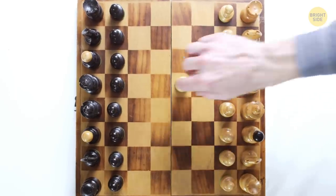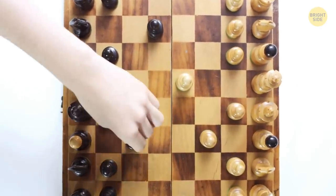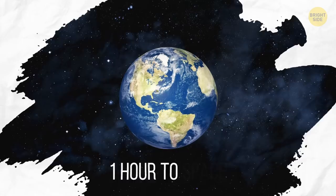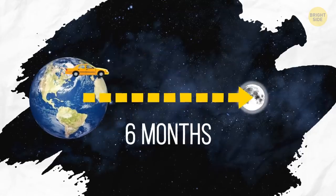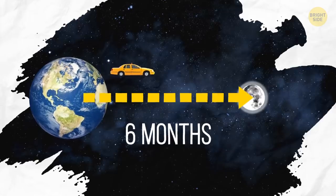There are more unique combinations in chess than atoms in the universe. If you get in your car and drive up to the sky at 60 miles an hour, it will take just one hour to get to space. Expect six months if you're going to the moon. And if you have such a car, we'd love to see it.